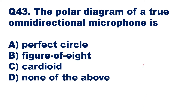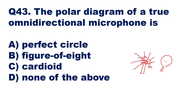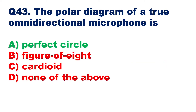For example, consider your microphone. It converts sound energy into electrical energy. If the sound energy can come from any direction — all directions — then it is called omnidirectional, and in that case the polar diagram will be circular. For a true omnidirectional microphone, sound comes from all directions, so the polar diagram will be a perfect circle. Option A — perfect circle — is the right answer.